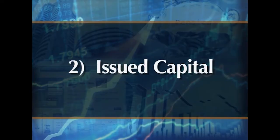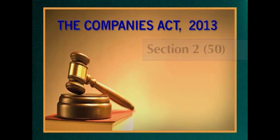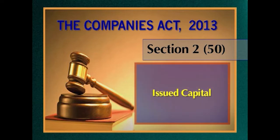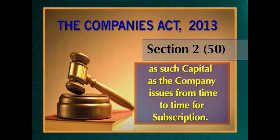2. Issued Capital. Issued capital is the amount of capital actually issued to the public for subscription and allotment. It is the part of the authorized capital offered to the public for subscription in the form of shares, and is always lesser than the authorized capital. Subsection 52 of section 2 of the Companies Act 2013 defines issued capital as such capital as the company issues from time to time for subscription.